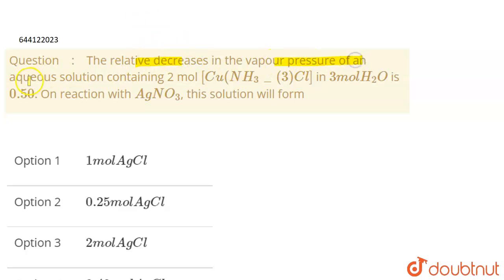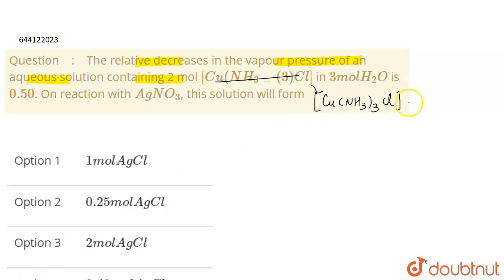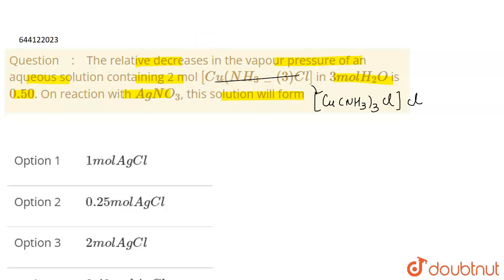The question is: the relative decrease in the vapor pressure of an aqueous solution containing two moles of the complex Cu(NH₃)₃Cl — where one Cl will be outside the coordination sphere — in three moles of water is 0.50.